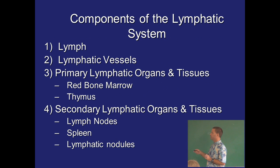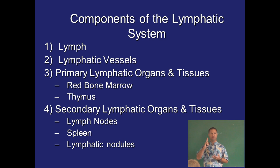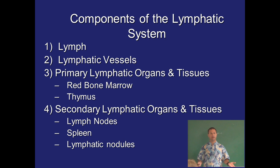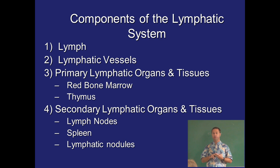Components of the lymphatic system include lymph, which is a clear fluid, vessels, and primary and secondary lymphatic organs. The primary lymphatic organs are where immunocompetence occurs. The cells we're talking about here are lymphocytes — specifically B and T cells. How are lymphocytes different than other white blood cells? They're specific. They have specific targets. They are your assassins, your hitmen. Before we release them, they have to go through school and become immunocompetent.